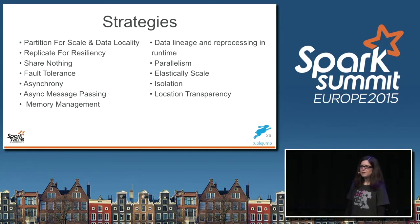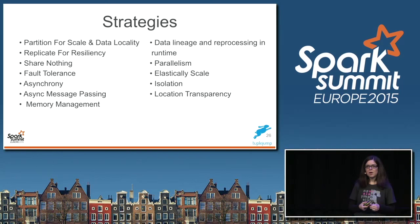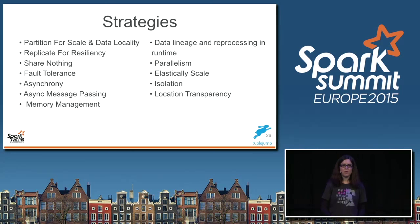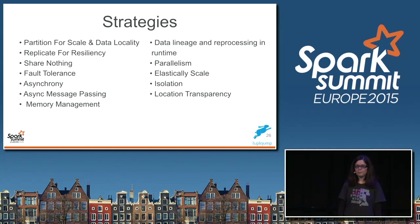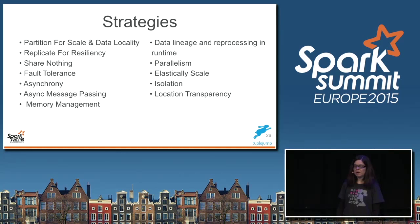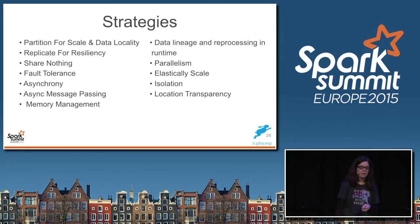Common strategies we all have to use: partitioning for scale and data locality — data locality is something people overlook, but when speed matters, you need to think about technologies, data models, and deployment architecture. Replication, sharing nothing, fault tolerance — most technologies have different fault tolerance strategies, so it's important to be very familiar with them. Async message passing, memory management, data lineage and reprocessing in runtime — very important for streaming architectures. Parallelism, elastic scale, isolation, and location transparency, which I think people overlook a lot.